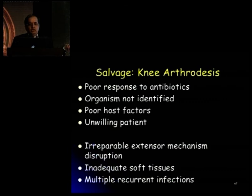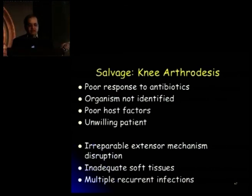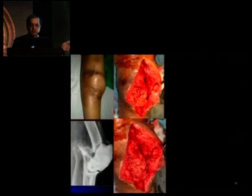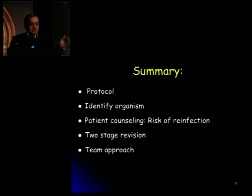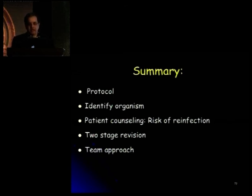The salvage option could be a knee arthrodesis for patients whose infection is not getting controlled or who do not wish to take the risk of reinfection. To summarize: you need to have a good protocol, identification of organism is extremely critical, and you need to counsel the patient on the risk of reinfection — about 8 to 10% in infected knees. Two-stage revision is certainly the gold standard, and it is certainly a team approach when dealing with these patients. Thank you very much.